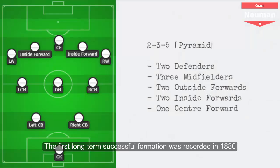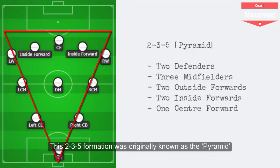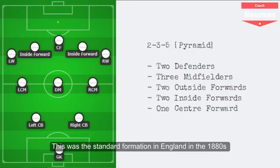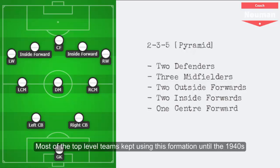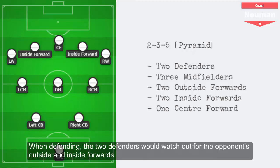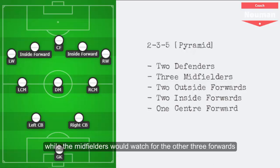The first long-term successful formation was recorded in 1880. The 2-3-5 formation was originally known as the Pyramid. This was the standard formation in England in the 1880s, and by 1890 it was used by many other countries as well. Most top-level teams kept using this formation until the 1940s. For the first time, a balance between attacking and defending was found. When defending, the two defenders would watch out for the opponents' outside and inside forwards, while the midfielders would watch for the other three forwards.